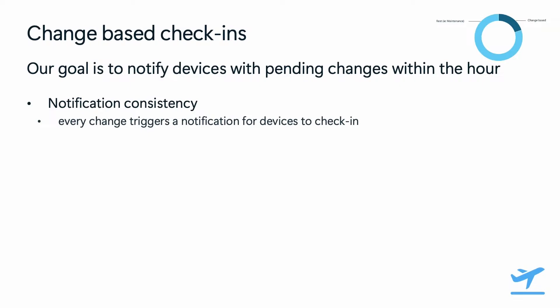We're now working towards a model where every change will queue a notification for devices to check in. And even in the event that a device or organization has temporarily hit its time-based quotas, instead of dropping those excess notifications, we will be queuing those notifications to be processed next.